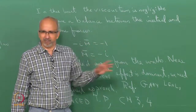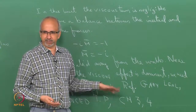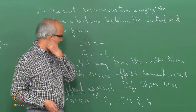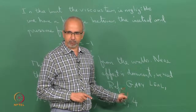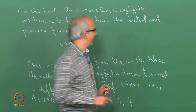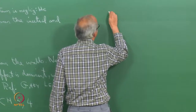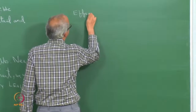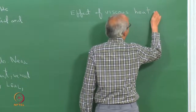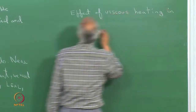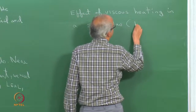If time permits we may revisit this problem of matched asymptotic expansions. Right now I just want to discuss perturbation theory and move on. This is one problem we have solved. The next problem I am going to talk about is also a solved problem — a worked problem in Gary Leal — from chapter 4. This problem has to do with taking into account the effect of viscous heating in a shear flow.